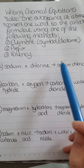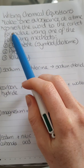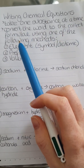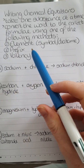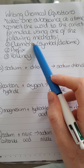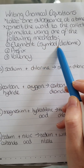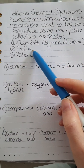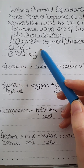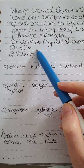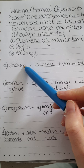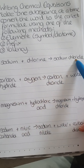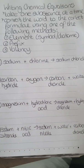You need to convert the word to the correct formula using one of the three methods we've already covered. You can use the element method — just write the symbol and add a small 2 if it's one of the seven diatomic elements. If it's not an element (two words), you may need the prefix method, and if there are no prefixes, use the valency method. A lot of people just write the symbol, like sodium Na, chlorine Cl, sodium chloride NaCl — that might work for some but not others.